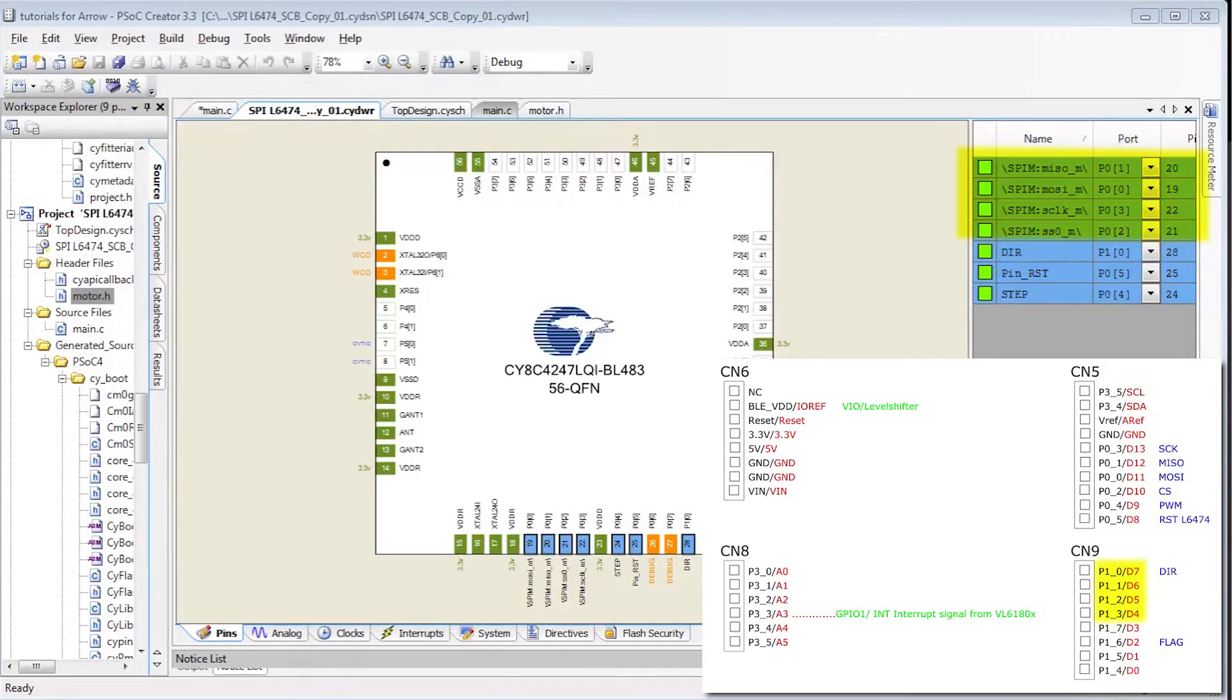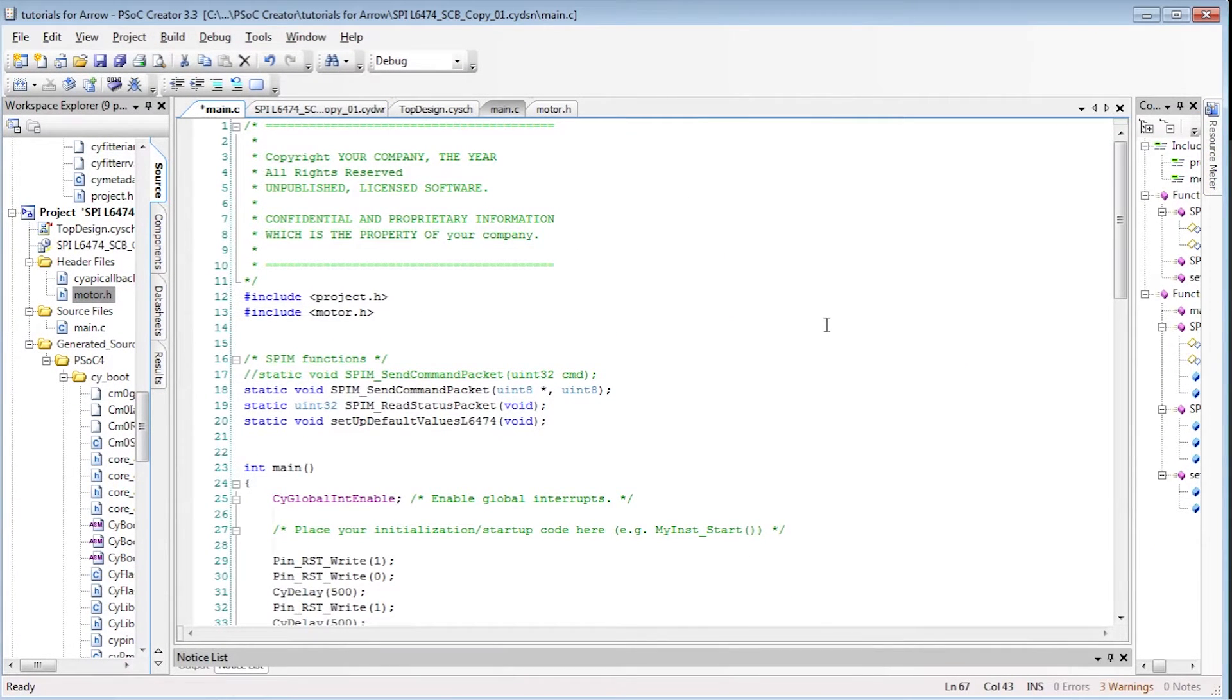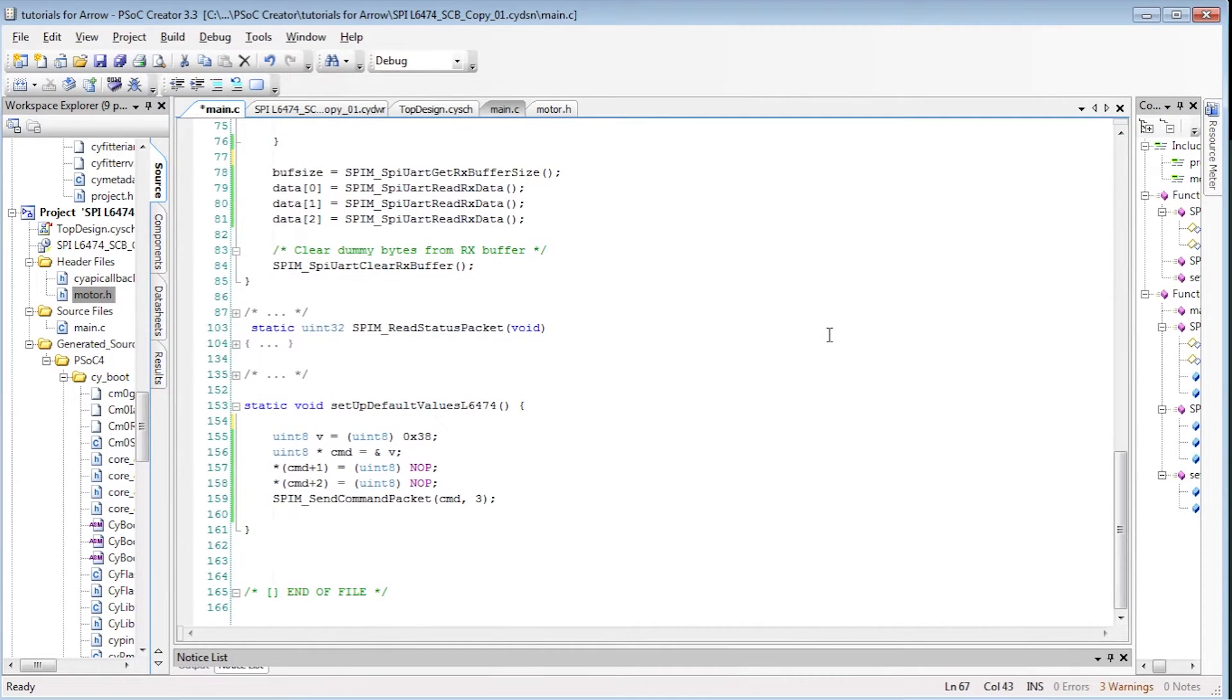Following the Arduino pinout, the SPI pins are port 0, pins 0, 1, 2 and 3. The program is just a few lines of code. First, we need to reset the device. Then, we start the SPI component and we call the method setupDefaultValuesL6474.